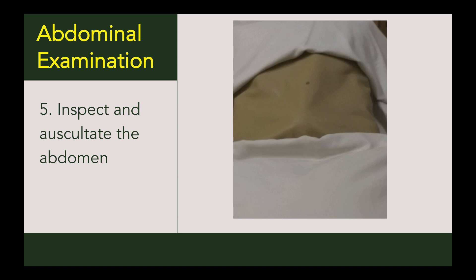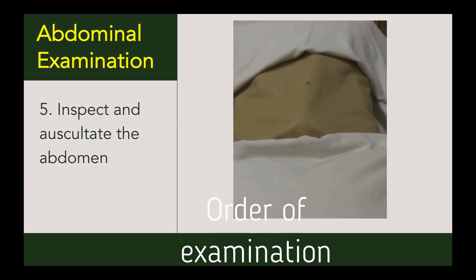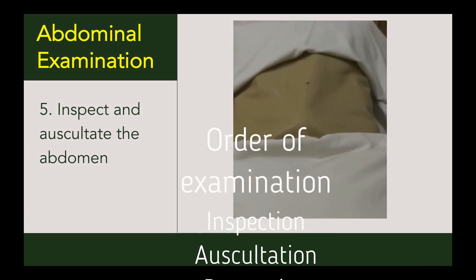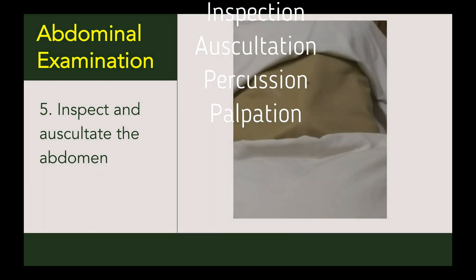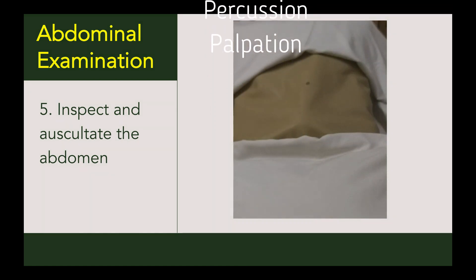The abdomen should be examined utilizing the standard techniques of inspection, auscultation, percussion, and palpation. On inspection, note the contour and shape of the abdomen — see whether it's flabby, flat, distended, or scaphoid in shape.